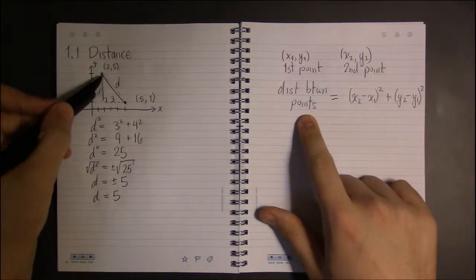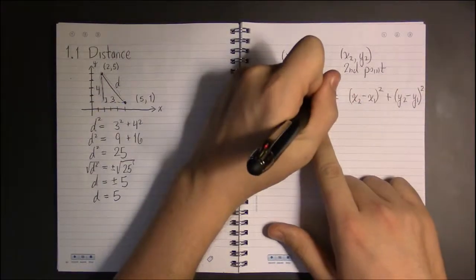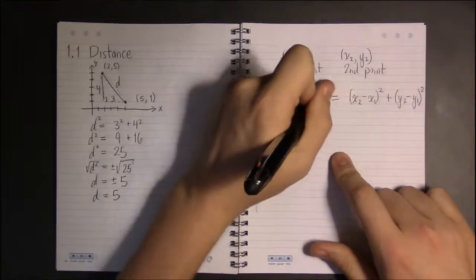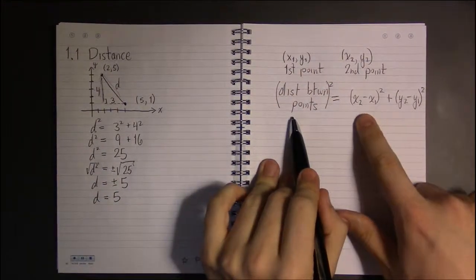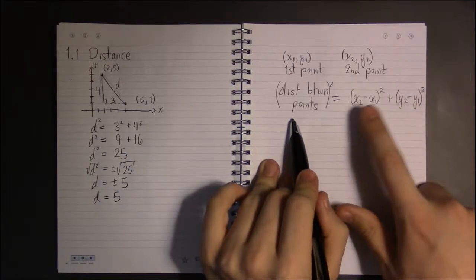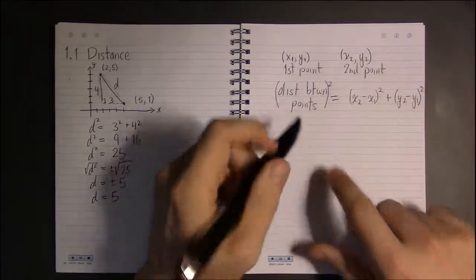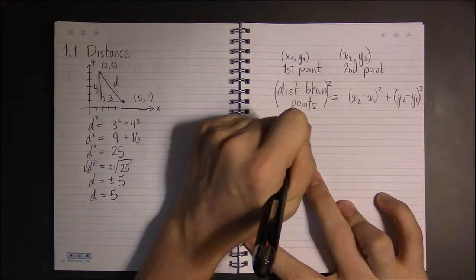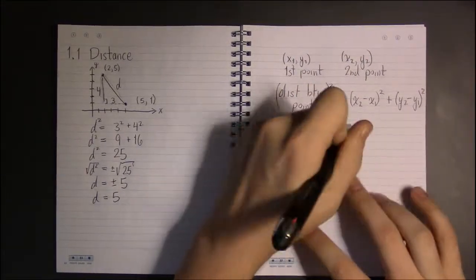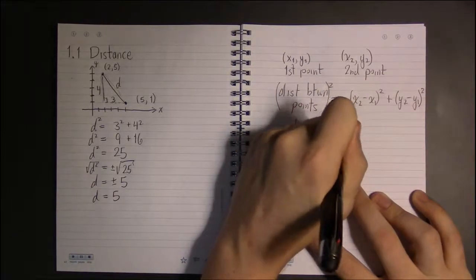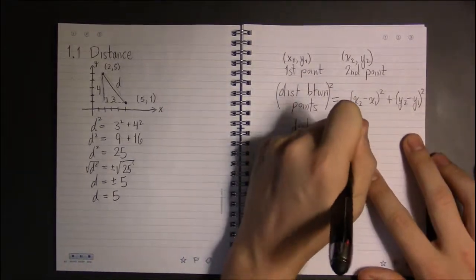So if we want just the distance itself, the square of these two points, the square of the distance rather, is going to be the square of these two, the sum of the squares of these two differences. But if we just solve for this distance, it's going to be the positive square root of the right-hand side.